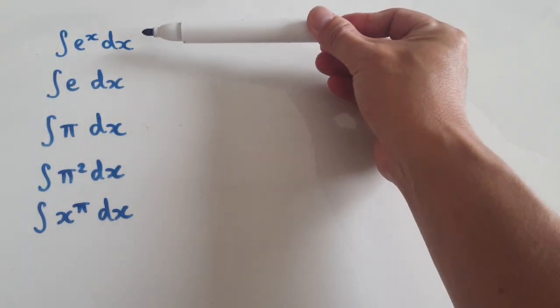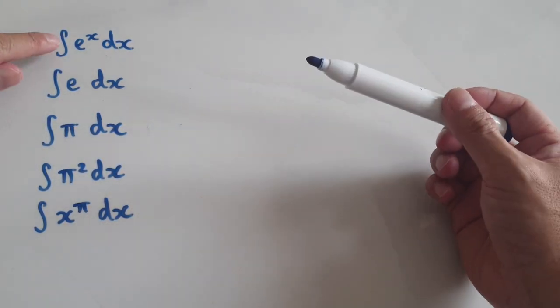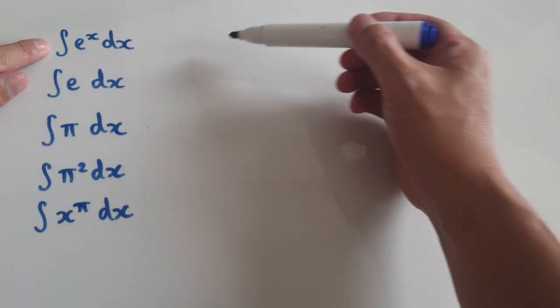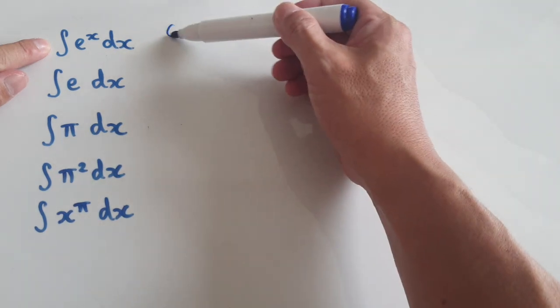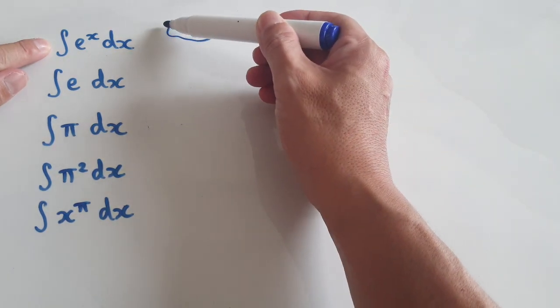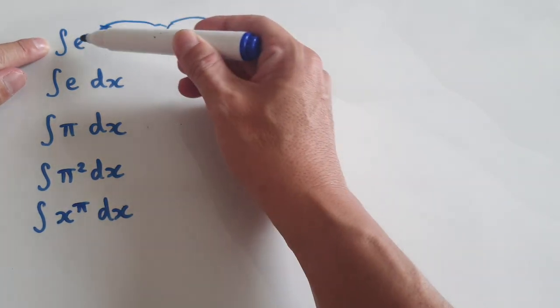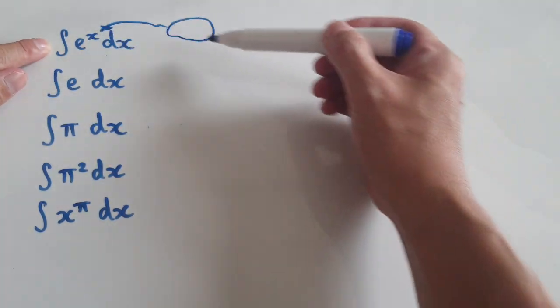In this video, I'm going to show you how to integrate these. So when you integrate e to the power of x, you're looking for something out there such that when you differentiate it, it gives you e to the power of x.